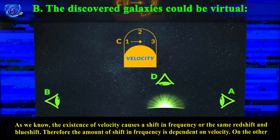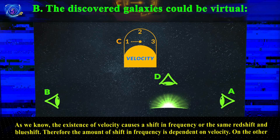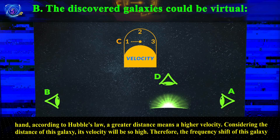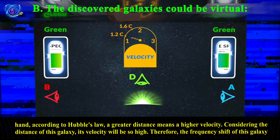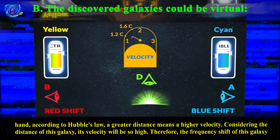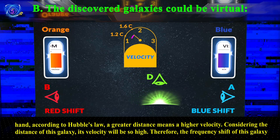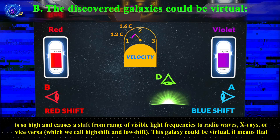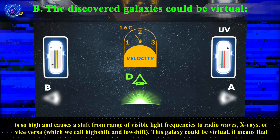The Discovered Galaxies Could Be Virtual. The existence of velocity causes a shift in frequency — the same red shift and blue shift — and the amount of frequency shift is dependent on velocity. According to Hubble's law, greater distance means higher velocity. Considering the distance of this galaxy, its velocity will be very high. Therefore, the frequency shift is so high that it causes a shift from the range of visible light frequencies to radio waves or x-rays, or vice versa, which we call high shift and low shift.